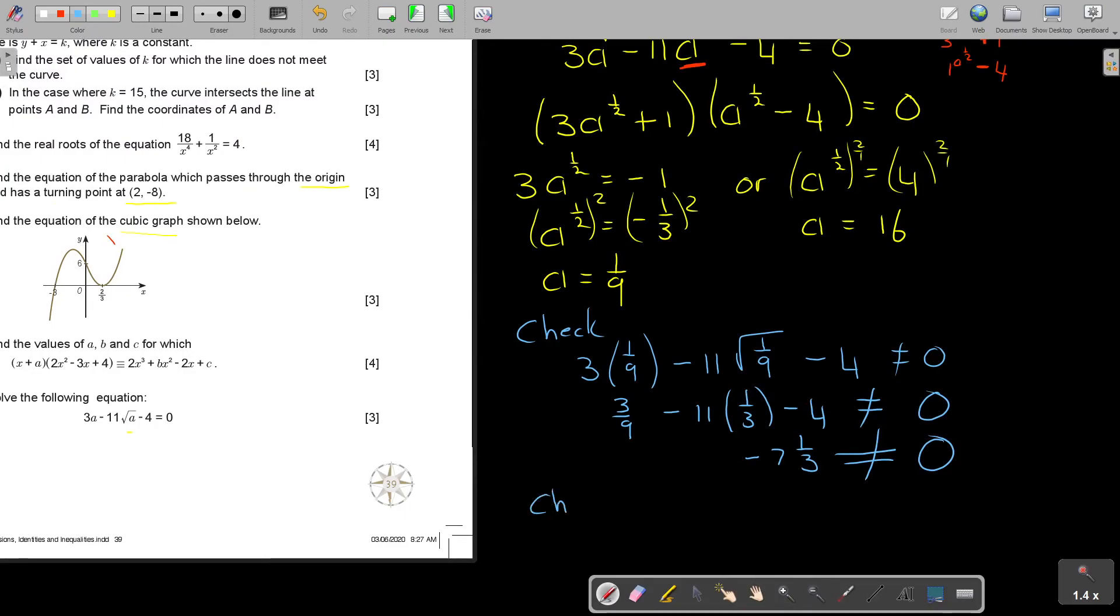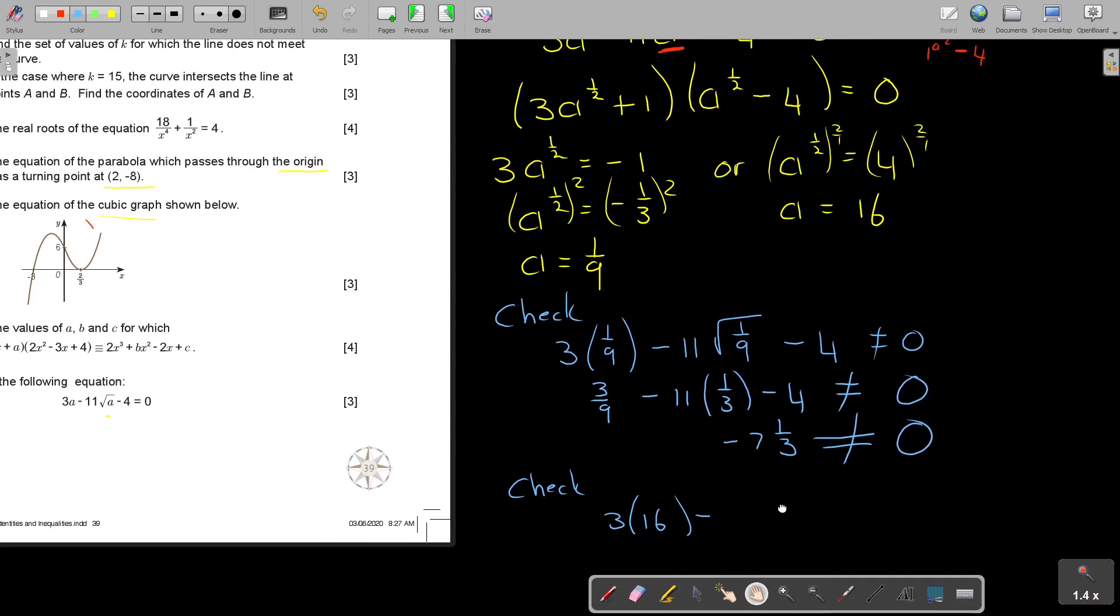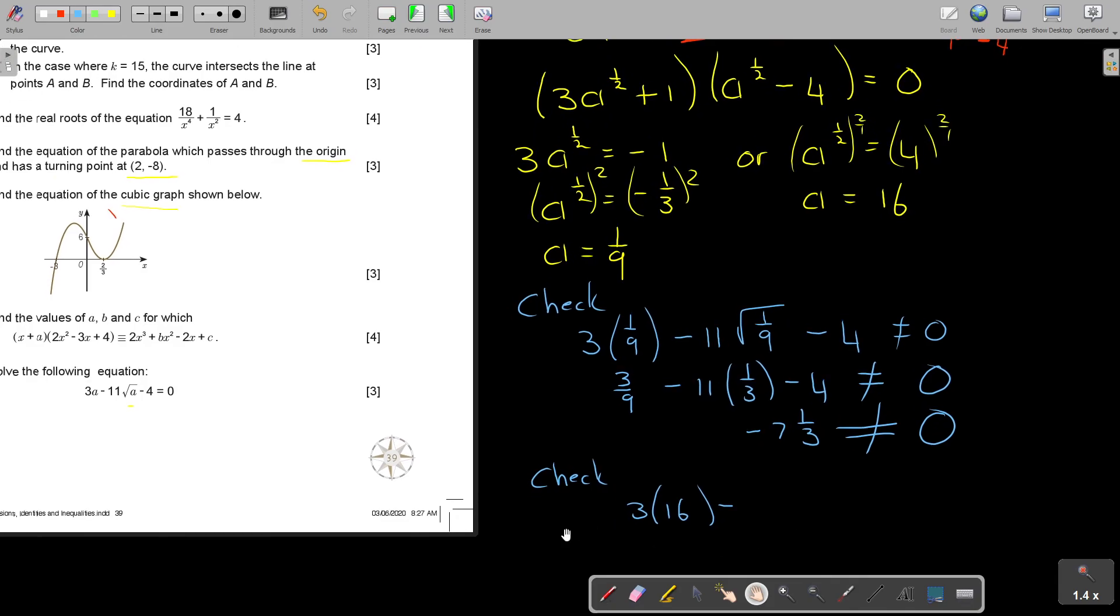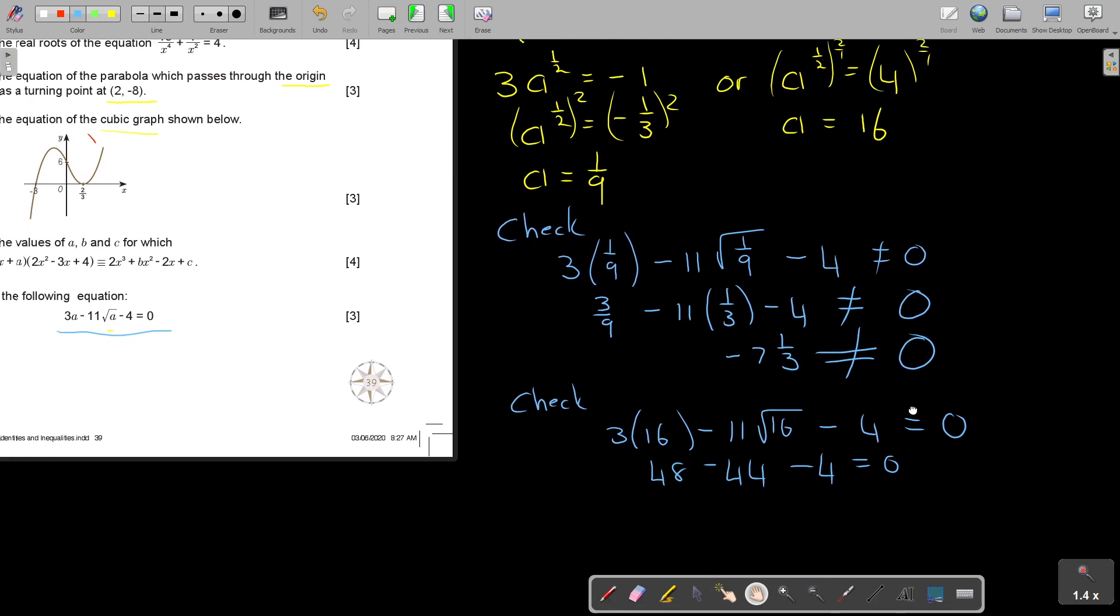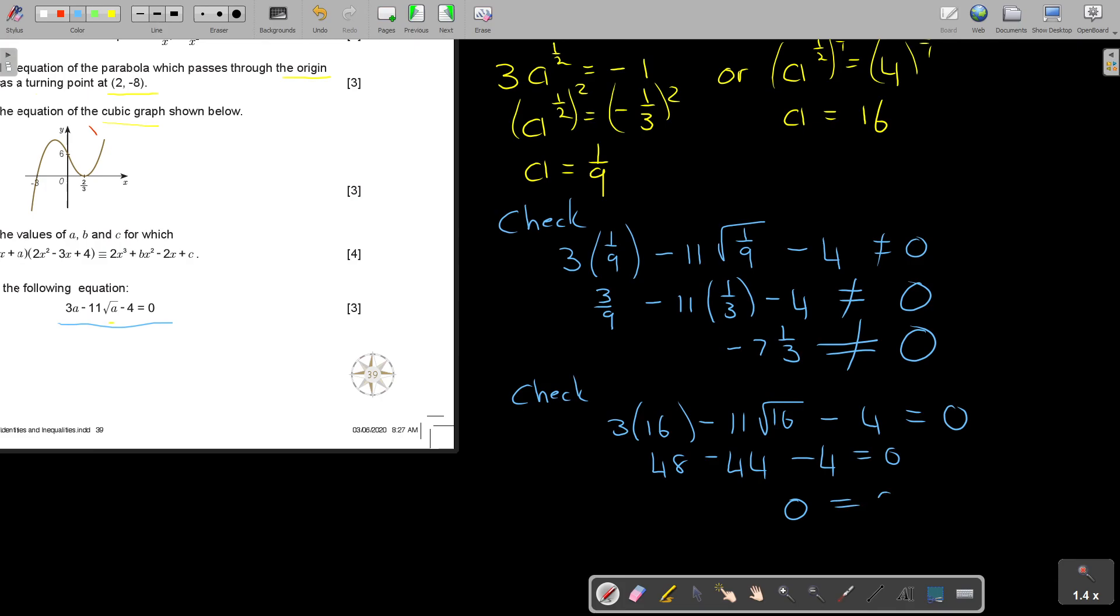Now we do exactly the same, but now we put the 16. So 3 times square root of 16 minus 11 times square root of 16 minus 4. Let's see if it's equal to 0. So if I go 3 times 4, that is 12, minus 11 times 4, that is 44, minus 4 equals 0. And 0 is equal to 0. Excellent. Not working for the first one, but working for the second.